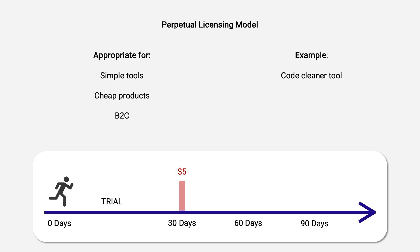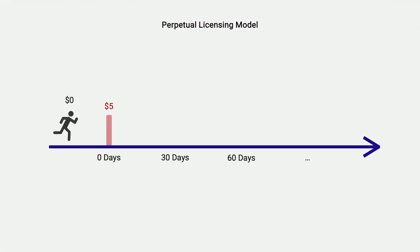The most basic licensing model is called a perpetual licensing model, where a customer pays once for the product and is able to use it forever. An appropriate product to sell with a perpetual license key would be a simple and cheap software tool that is sold to customers rather than businesses. A tool that cleans code can be one relevant example. This is how a perpetual license works: a customer buys the product for $5 and can use it forever.